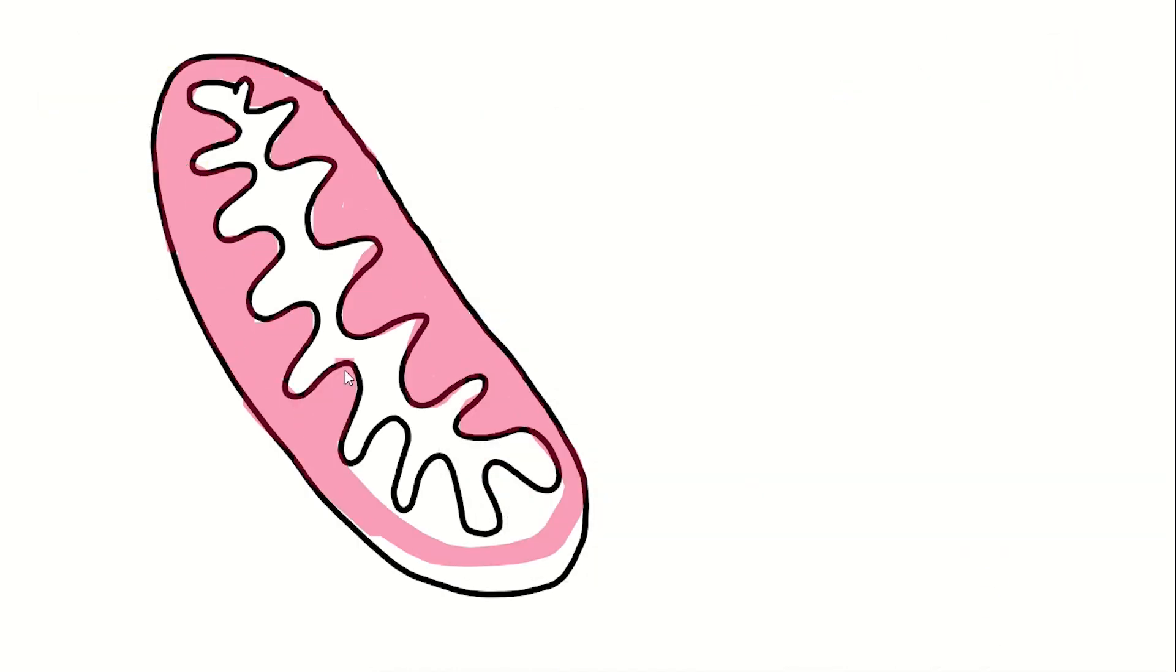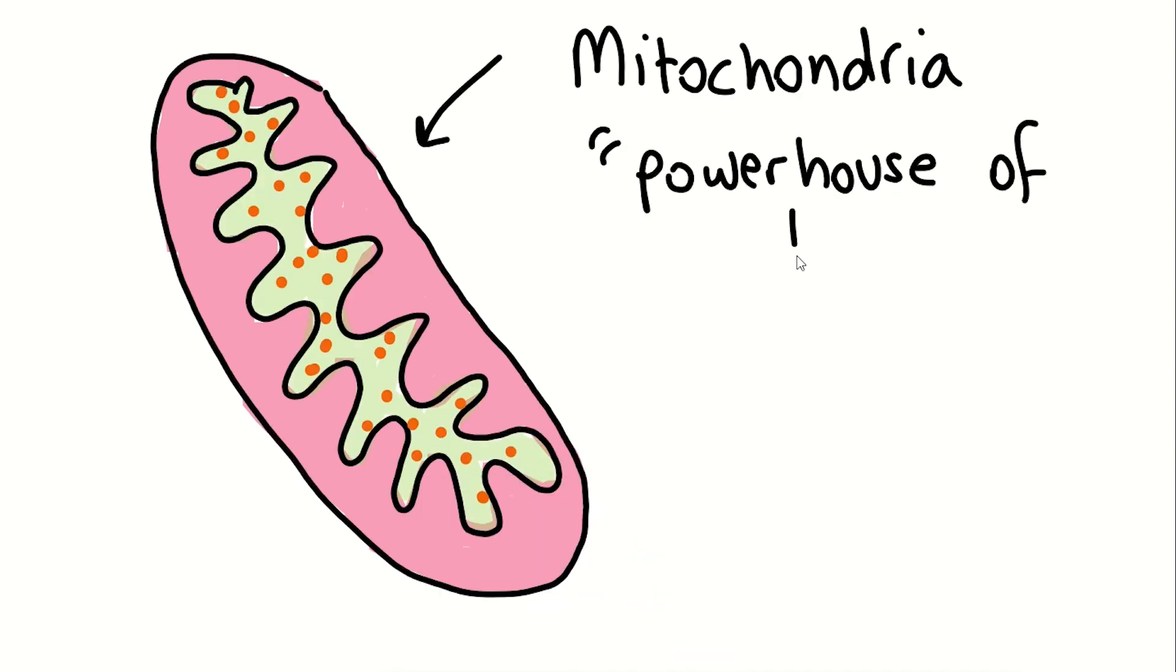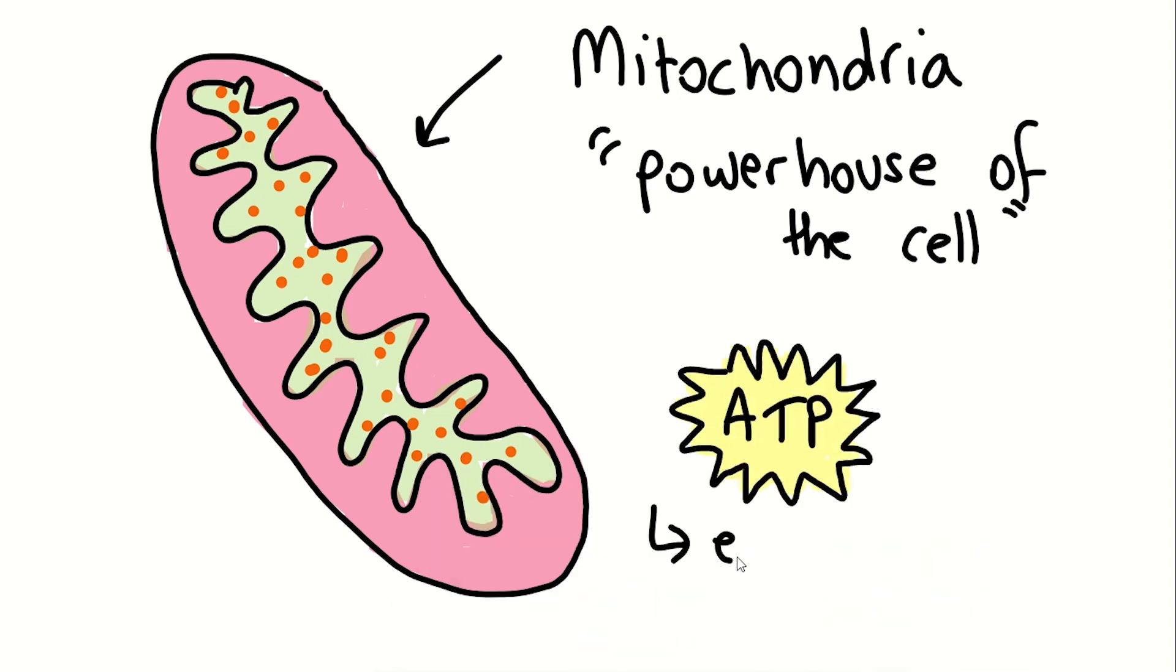Mitochondria are often referred to as the powerhouse of the cell. It is the location where the majority of the body's energy source, ATP, is made in a process known as aerobic respiration.